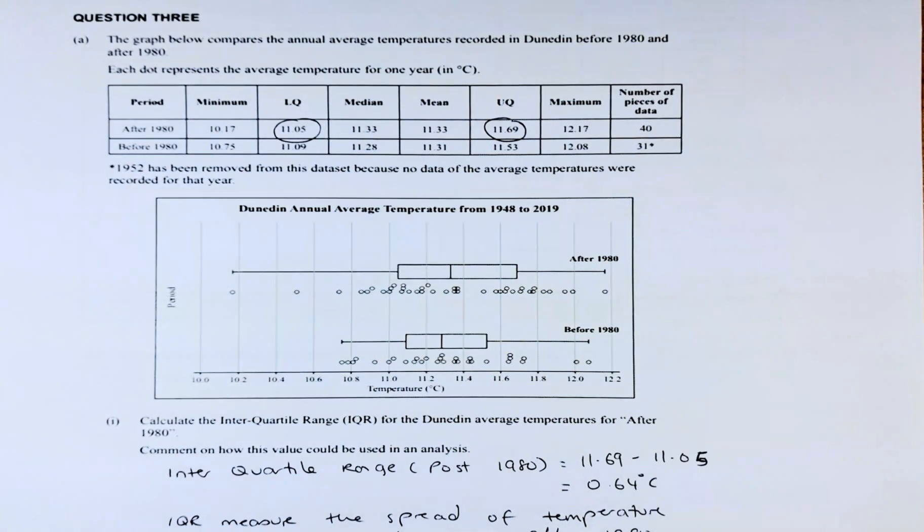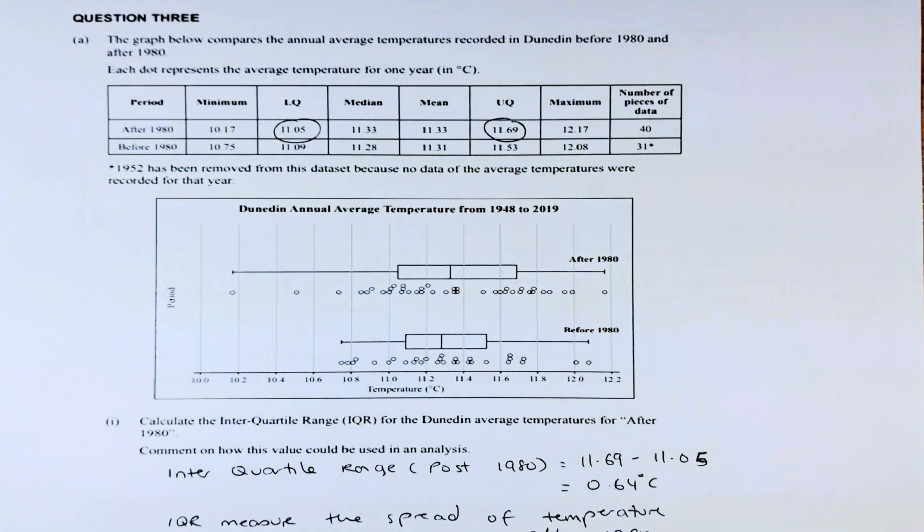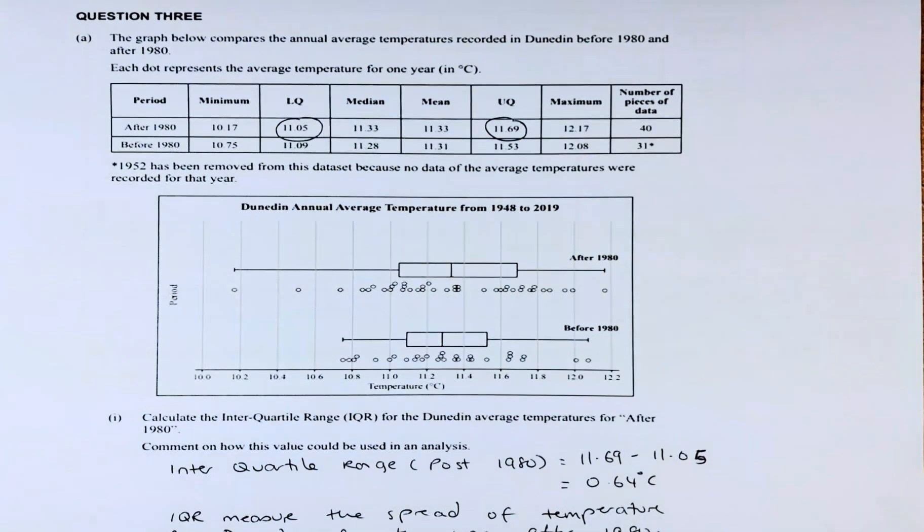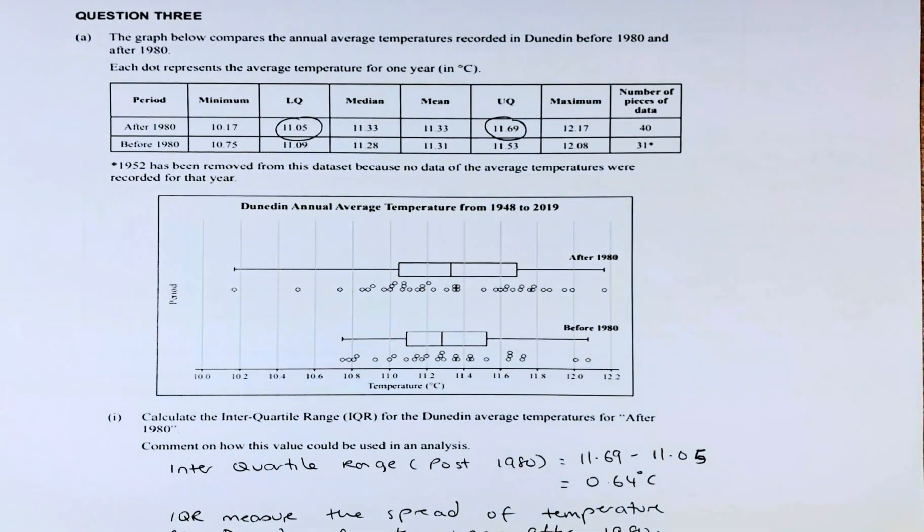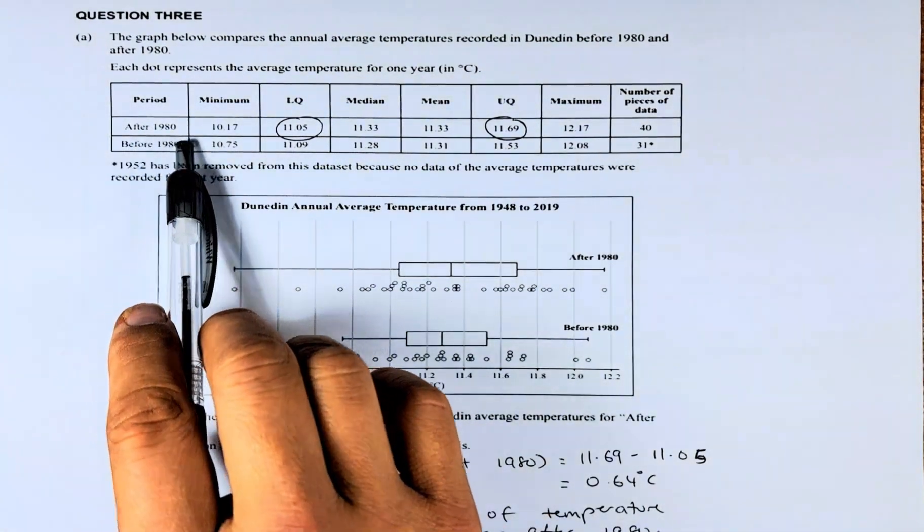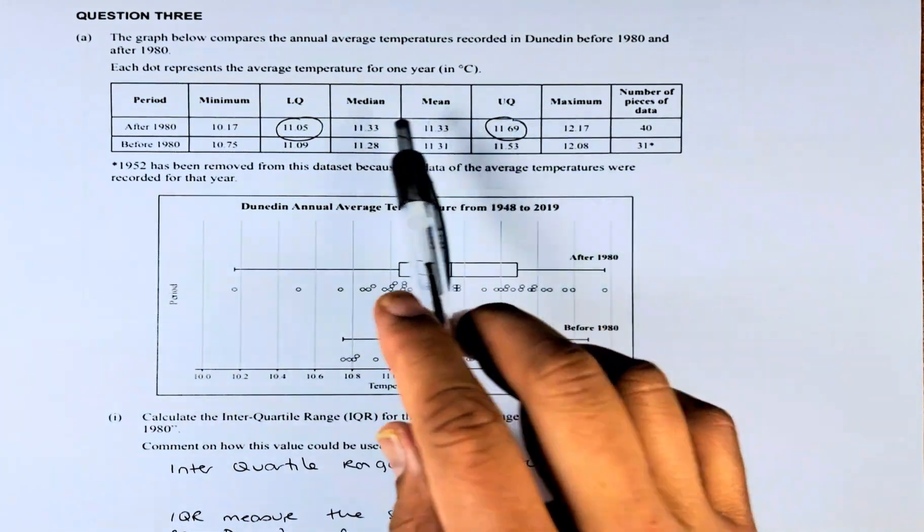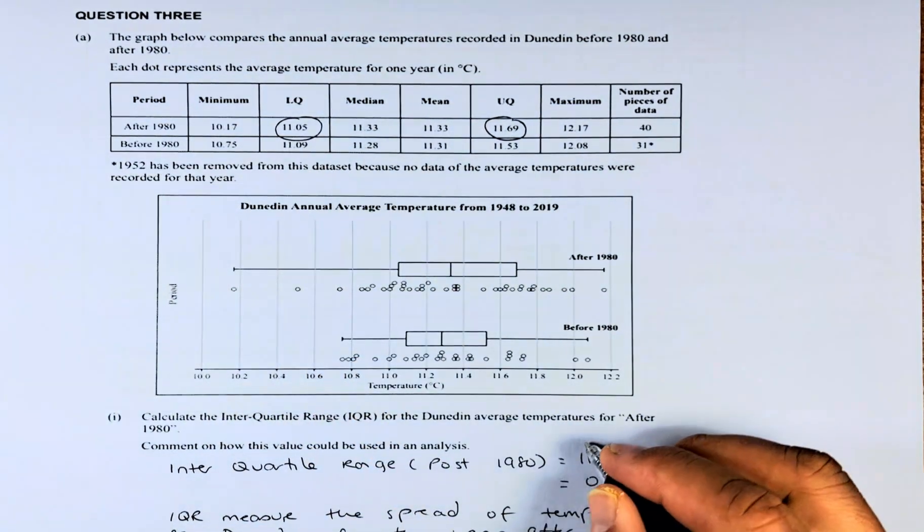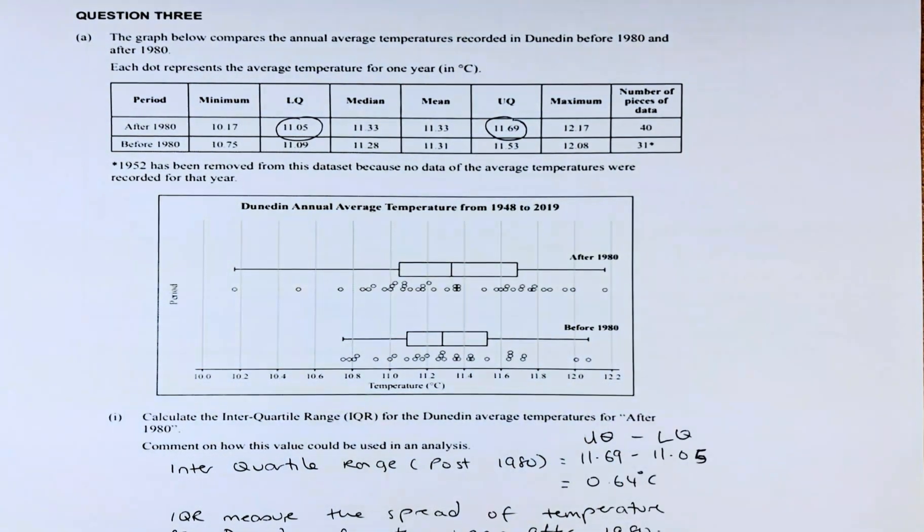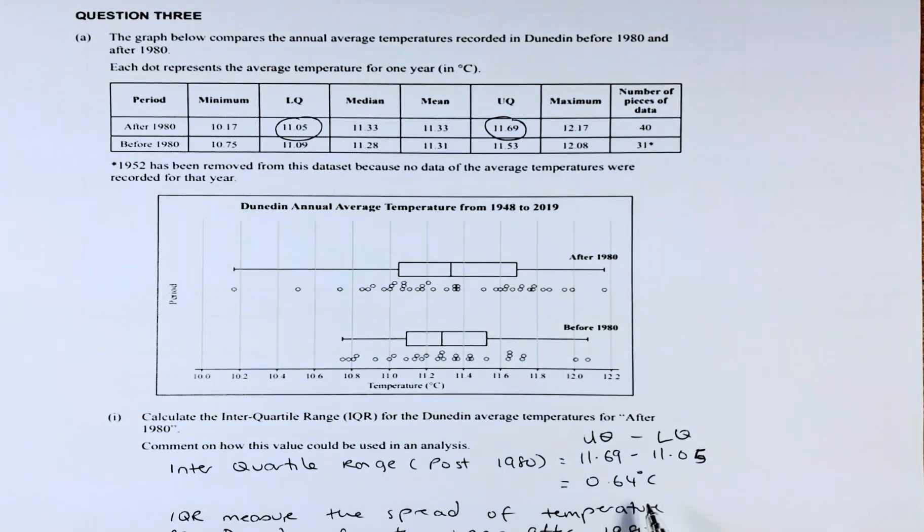We have a box and whiskers, also called the box plot, and we are going to analyze the data. The question is: calculate the interquartile range (IQR) for the Dunedin average temperature for after 1980. Comment on how this value could be used in analysis. So the IQR for after 1980 is at the top column. We take upper quartile minus lower quartile. In this case, 11.69 minus 11.05 and the answer comes up to 0.64.